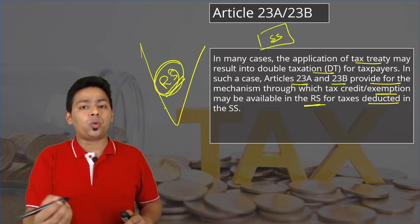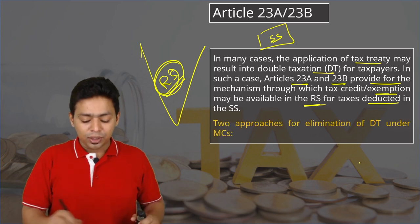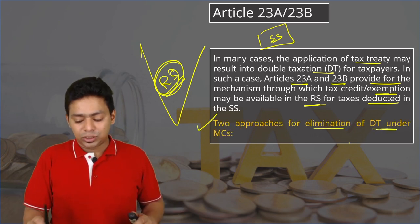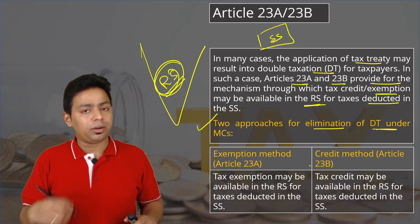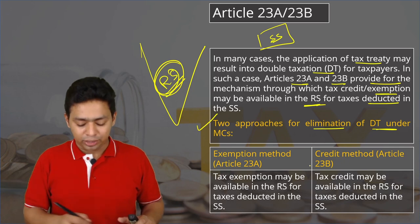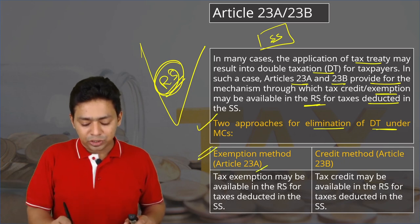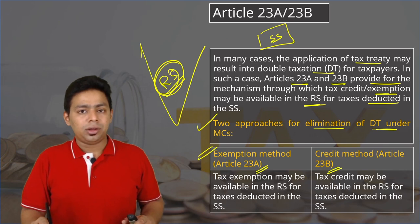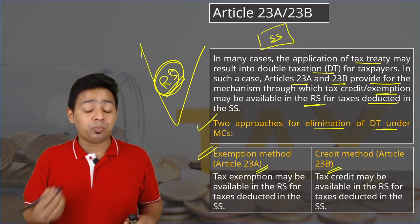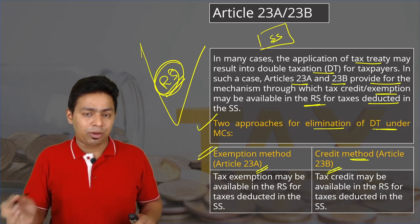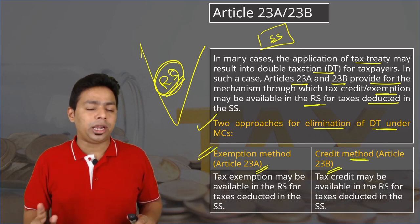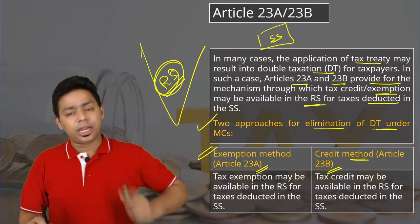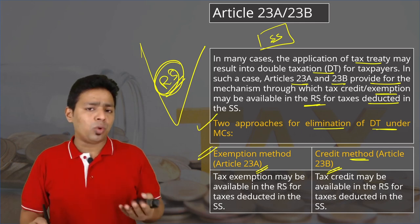If it is an Indian resident who has also paid tax in the source state, then it is the Government of India which should provide relief from double taxation. There are two approaches for elimination of double taxation under this model convention: one is the exemption method (Article 23A) and the other is the credit method. India follows majorly the credit method — majority of countries follow the credit method, which is more sensible.